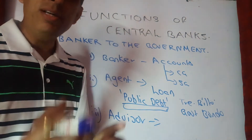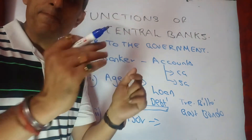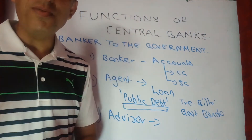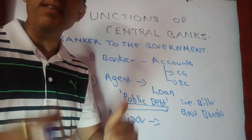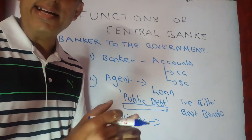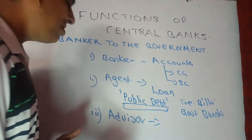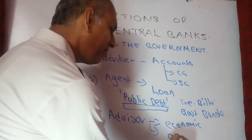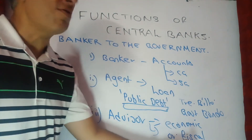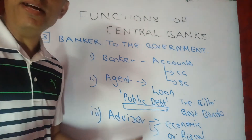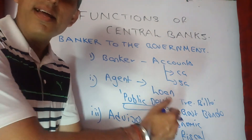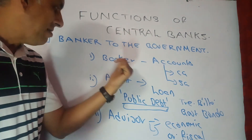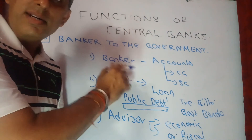To increase demand, RBI may suggest the government increase its expenditures. Increasing expenditure creates jobs, which creates further income, which in turn creates further demand for goods — helping address the present problem of slow growth rate. As an advisory role, RBI can help the government on various economic and fiscal measures before they are implemented. So the three functions of the central bank as banker to the government are: banker, agent, and advisor.